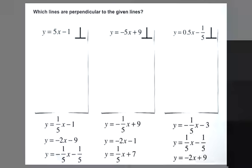The line y = 1/5x - 1 is perpendicular to y = -5x + 9. That's because the slope is a negative reciprocal - it's flipped, and the sign is changed.